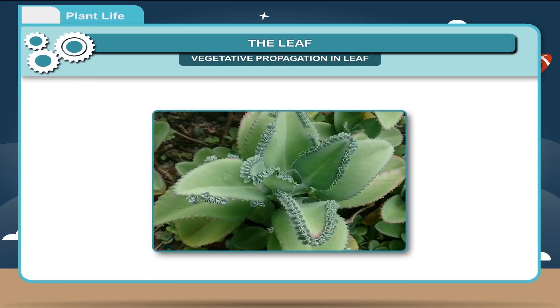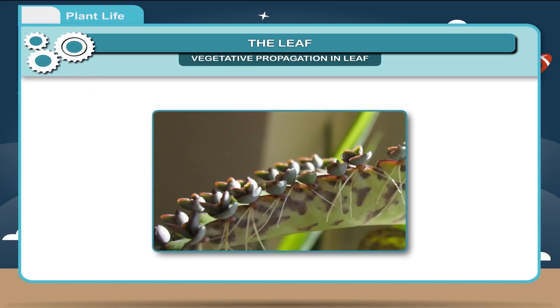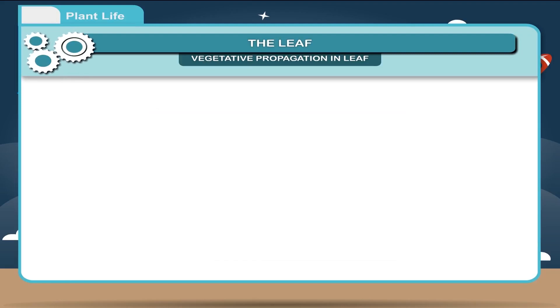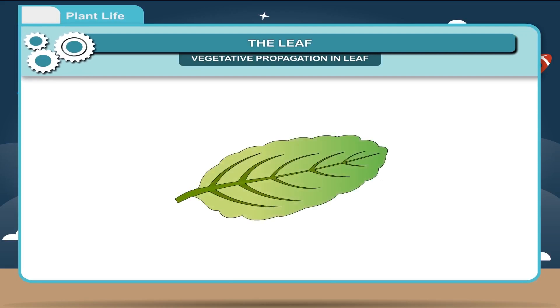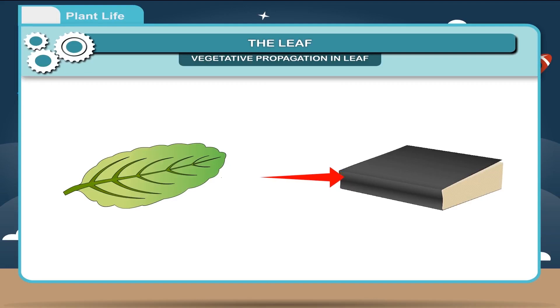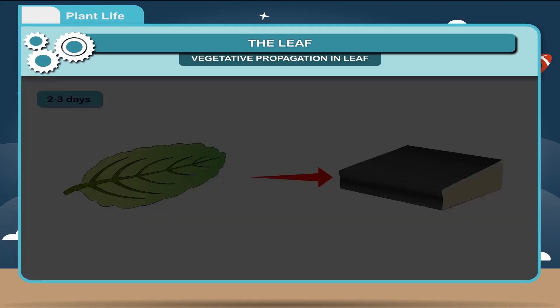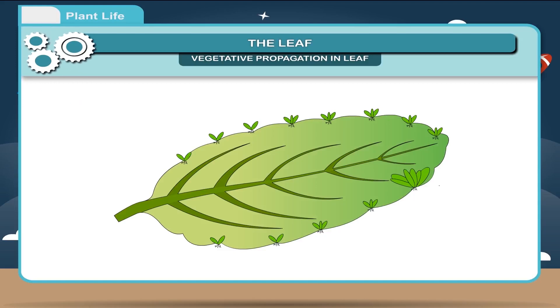Vegetative Propagation in Leaf: Some plants like the bryophyllum have fleshy and thick leaves bearing buds on its edges. These buds on the edges of the leaves grow as new plants. When leaves fall down on the ground, the buds start growing. Activity: Pluck a bryophyllum leaf and place it in between the pages of a book. If you see it after 2-3 days, you will find several new plants growing from the buds all along the edges.